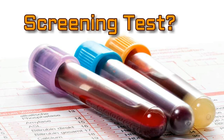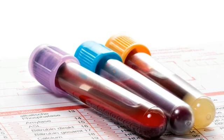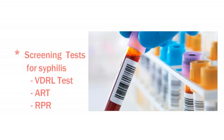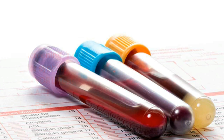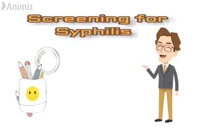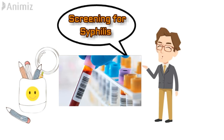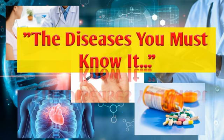The screening test is performed as a preventive measure to detect potential health problems or disease in someone who doesn't yet have signs or symptoms. The purpose of screening is early detection, helping to reduce the risk of disease or to detect a condition early enough to treat it most effectively. These screening tests for syphilis are used to detect reagin antibodies, which appear in the patient's blood serum when patients are infected with syphilis and can be present in high concentration. However, reagin antibodies can also appear in some other disease conditions besides syphilis, which is why it is a non-specific test.